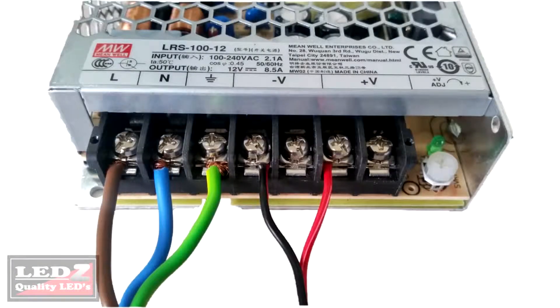In this diagram that you'll see here is where everything has been wired up, where you can clearly see the live, the neutral, the earth, as well as the V negative and V positive, and where all the cables need to match to where they need to be.